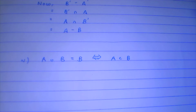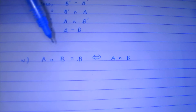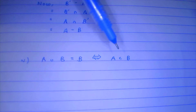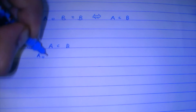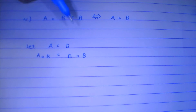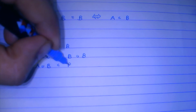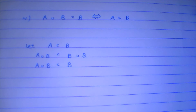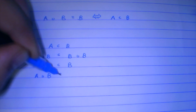To prove such a statement we first assume one side and derive the other, then assume the other and derive back. First, let us assume that A is a subset of B. This means that A union B is going to be a subset of B union B, and hence A union B is a subset of B. But the LHS contains all elements of B along with some elements of A, and it is a subset of B. Since B is equal to B, adding something to B can make it a superset but not a proper subset — so A union B must be equal to B.